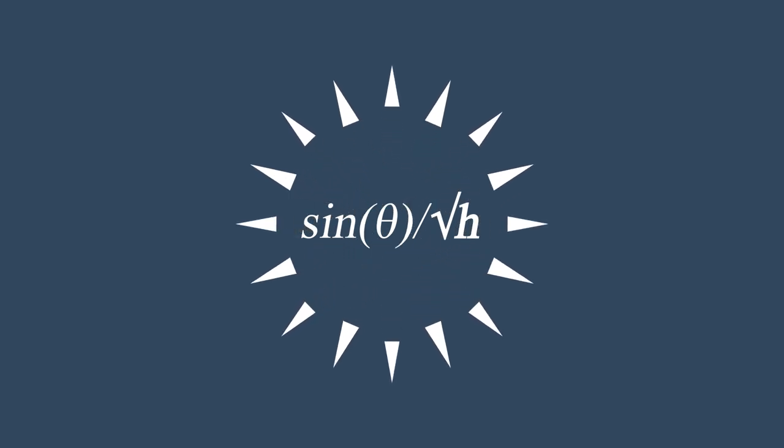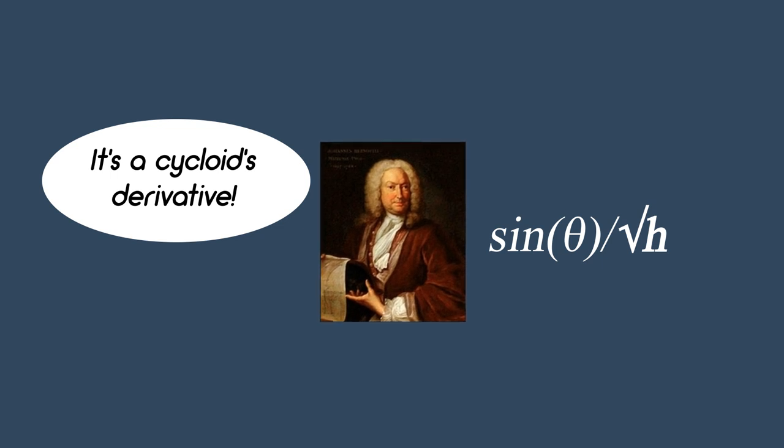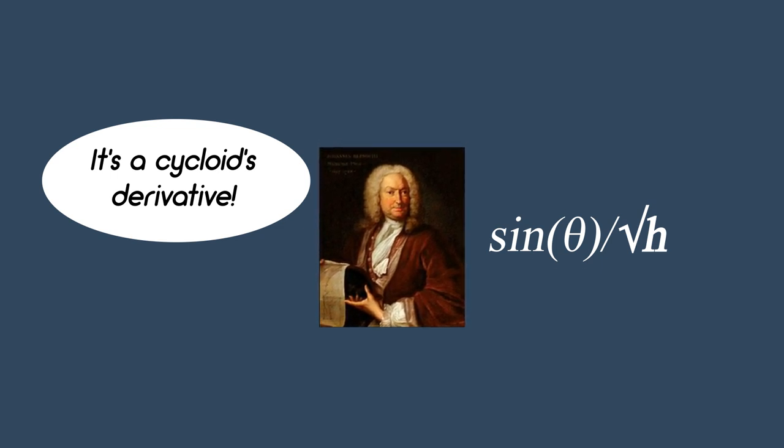So we know this equation for the tangent line is the derivative of whatever function represents the brachistochrone. When Bernoulli saw it, he immediately recognized it as the derivative of a cycloid. But what exactly is a cycloid?